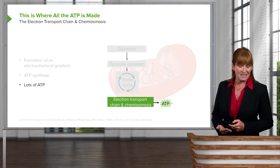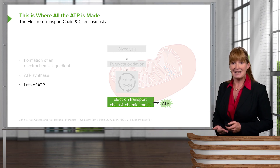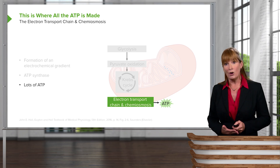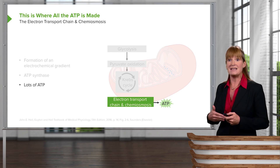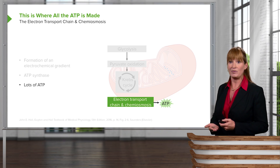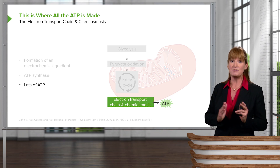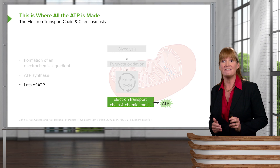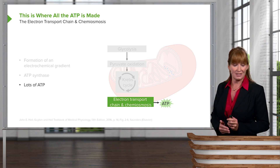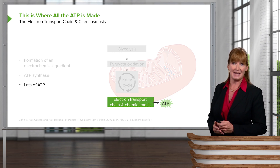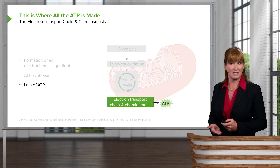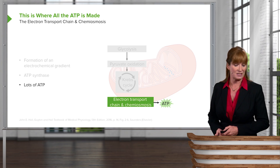ATP synthase is the enzyme involved in oxidative phosphorylation. We had substrate-level phosphorylation before, and now oxidative phosphorylation is going to happen in the process of chemiosmosis and the electron transport chain.